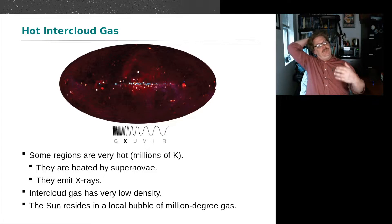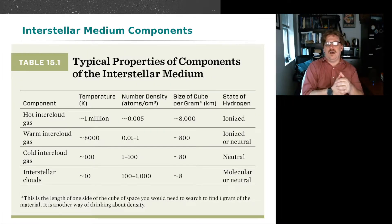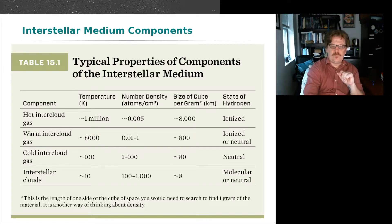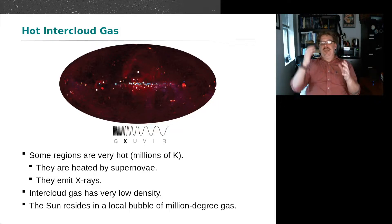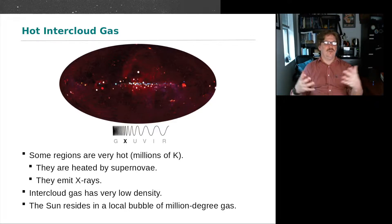Where do you find hot intercloud gas? These regions are primarily heated by supernovae. Higher-mass stars die violently — they explode, and that explosion imparts a tremendous amount of energy to the surrounding gas, translated into kinetic energy which defines temperature. These particles are moving at millions of Kelvin. If you were in a spacecraft in this hot gas, it would not instantly melt because the density is so low — essentially 0.005 atoms per cubic centimeter, or about five atoms per cubic meter. The spacecraft would be hit occasionally by very high-energy particles but certainly not melt.